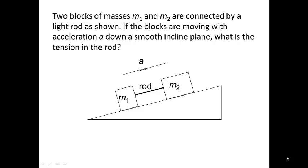Two blocks of masses M1 and M2 are connected by a light rod as shown. If the blocks are moving with acceleration a down a smooth inclined plane, what is the tension in the rod?